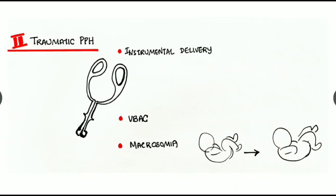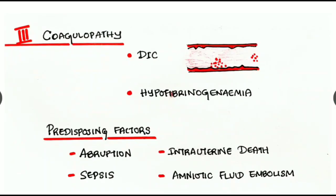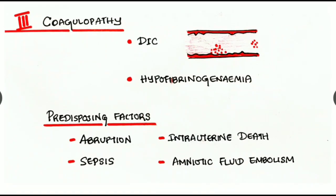The second type is traumatic postpartum hemorrhage. It can be due to instrumental delivery like forceps delivery, vaginal birth after cesarean section, or macrosomia where there is increased size of the fetus with increased head circumference. The third cause is coagulopathy, which can be due to DIC or hypofibrinogenemia.